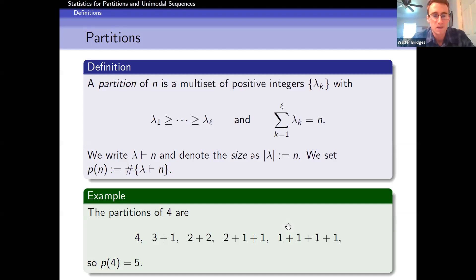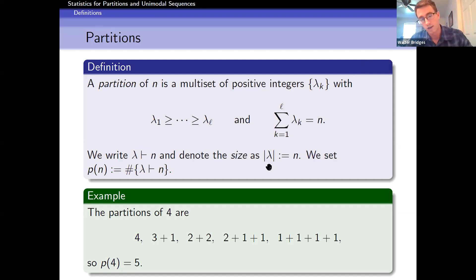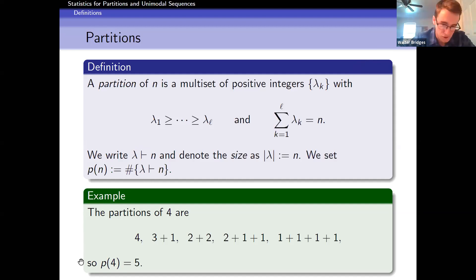Let's make sure we're all on the same page with partitions. A partition of an integer n is a multi-set of positive integers written in weakly decreasing order that sum to n. We write lambda as a partition of n, denote the size with absolute value notation, and p(n) is the total number of partitions of n. For example, here are all the partitions of 4 — there are five of them, so p(4) equals 5.